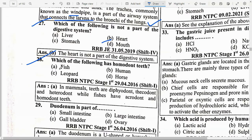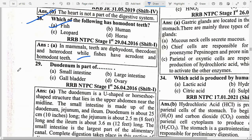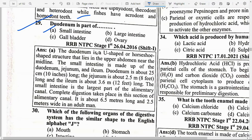Which of the following has homodont teeth? Option A — Fish. In mammals, teeth are diphyodont, thecodont and heterodont, while fishes have acrodont and homodont teeth. Duodenum is a part of option A — small intestine. The duodenum is a U-shaped or horseshoe-shaped structure in the upper abdomen near the midline. The small intestine is made up of the duodenum, jejunum and ileum.